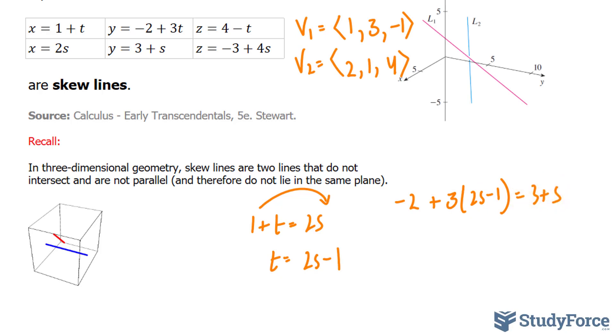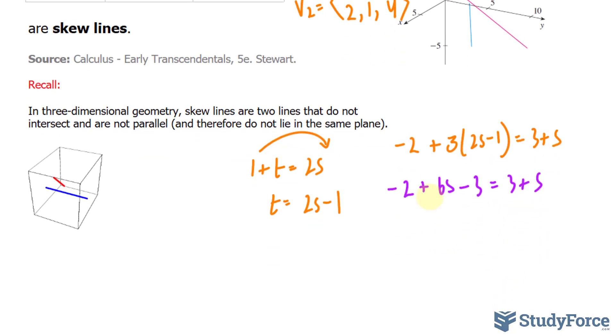I'll solve for s and then substitute what I get for s into this equation to get t. Notice, minus 2 plus 6s minus 3 is equal to 3 plus s. Let's solve for s. Bringing all the s terms over, we have minus 2 minus 3 minus 3 is equal to s minus 6s, negative 5 on the right side.